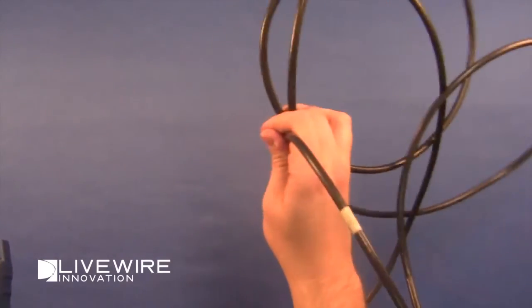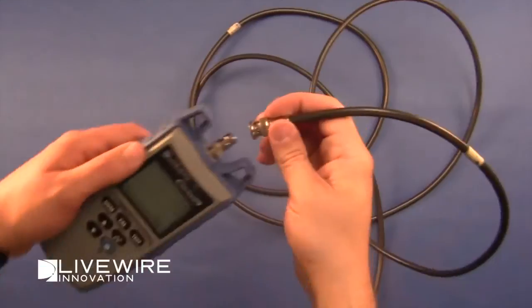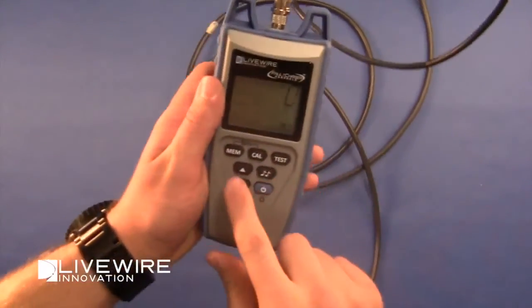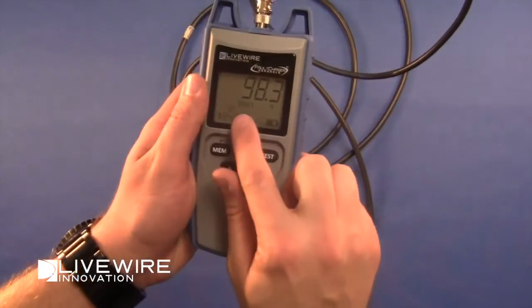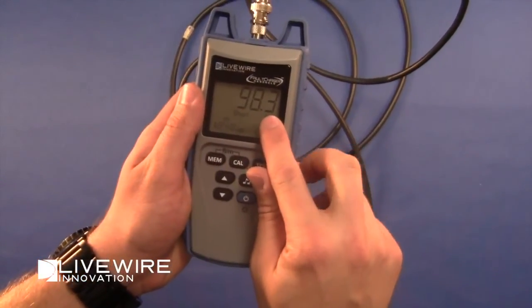Here's another example of detecting a short, this time using 900 feet of RG6 cable. The NVP value of this cable is 84.8. The Fault Chaser tells us that there's a short 98 feet away.